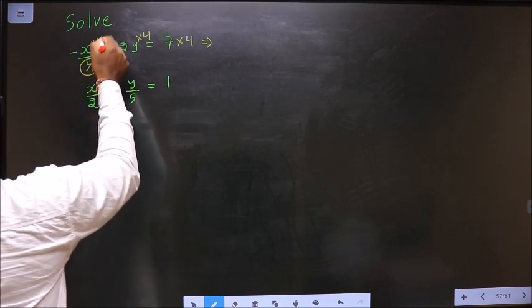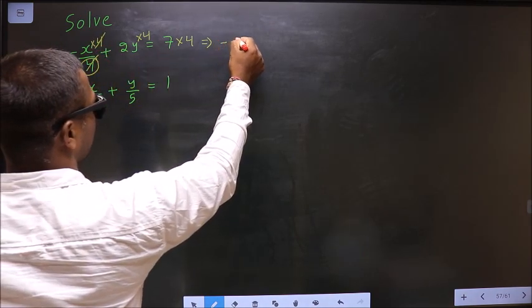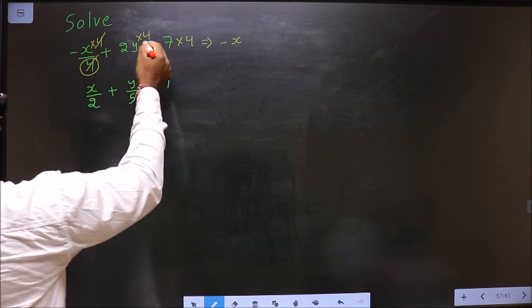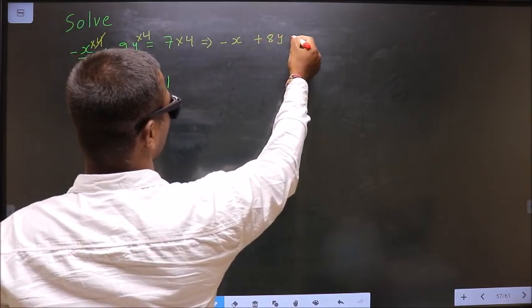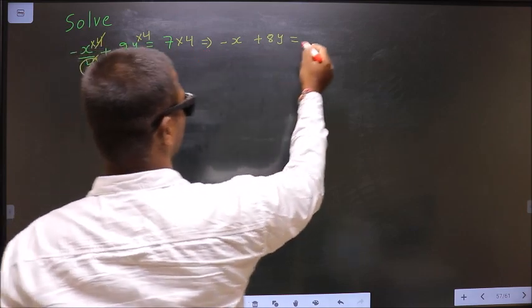Now, the denominator cancels out, you get -x. And here 2y times 4 is 8y equal to 7 times 4 is 28.